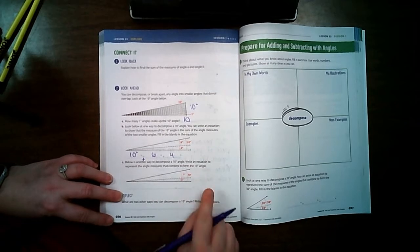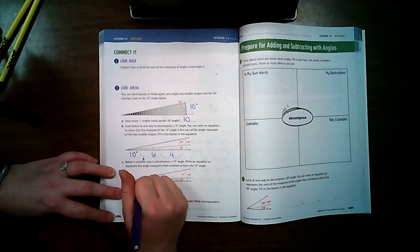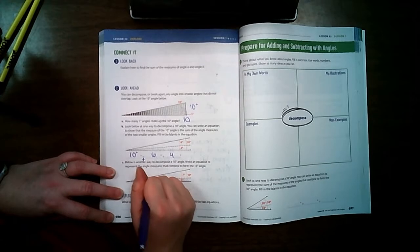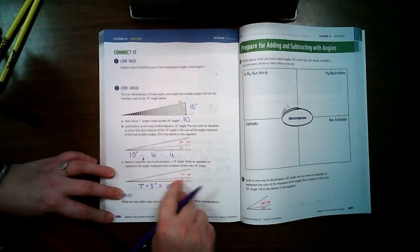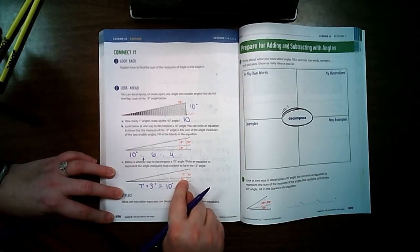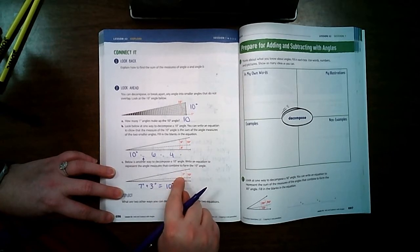Here's another one. We can even write it the normal way. 7 degrees plus 3 degrees equals 10 degrees. Because when I add this one, which is worth 3, with that one, which is worth 7.